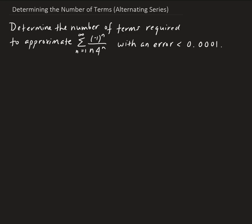In this example, we want to figure out how many terms we need to achieve this given error. Recall, in one of the videos I actually proved that the residual for the alternating series — the residual being the actual difference between s, which is what the series is converging to, and the first n partial sums — is less than or equal to the (n+1)th term.